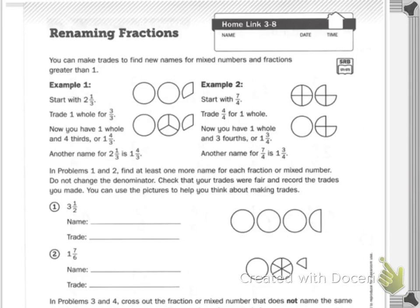In Lesson 3-8, we talked about renaming fractions. Seeing a mixed number, you can turn that into an improper fraction, or an improper fraction can be turned into a mixed number — renaming fractions. You can make trades to find new names for mixed numbers and fractions greater than one.